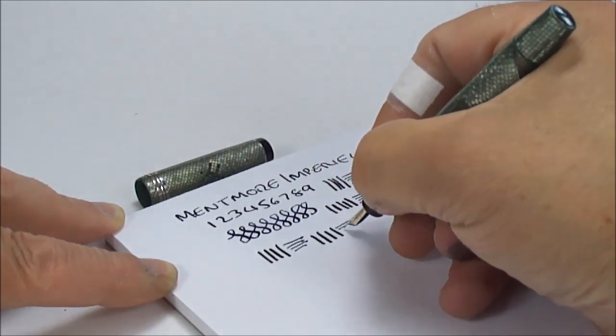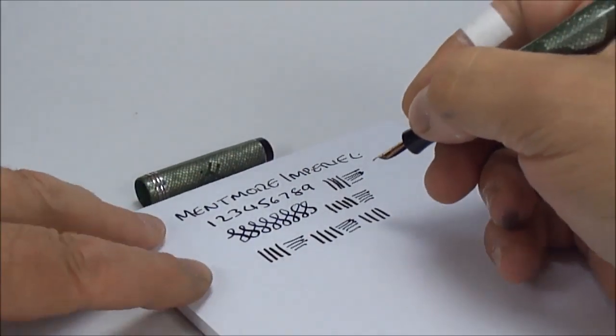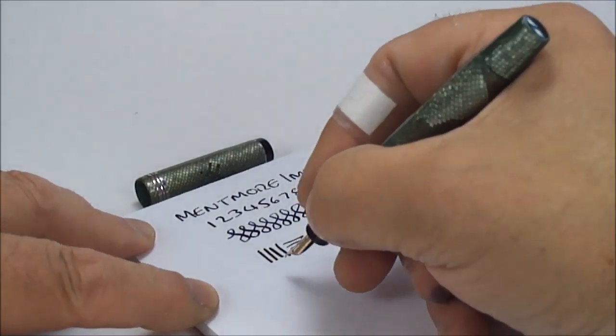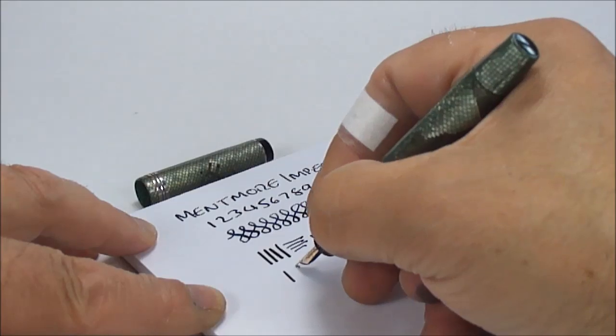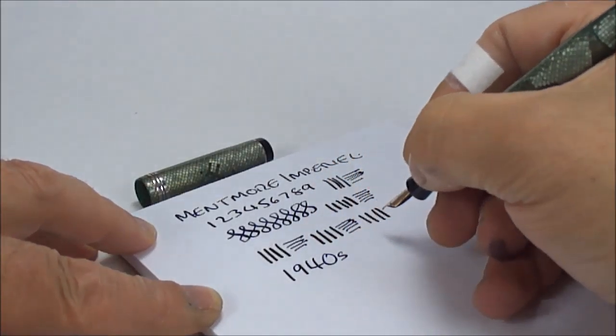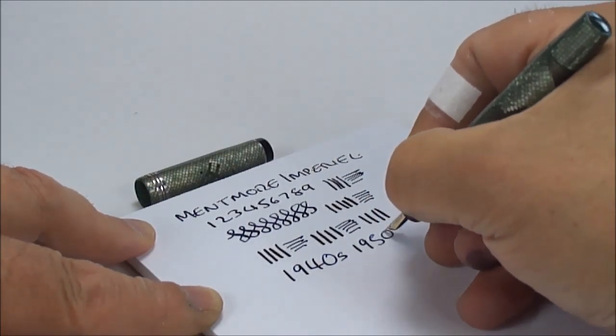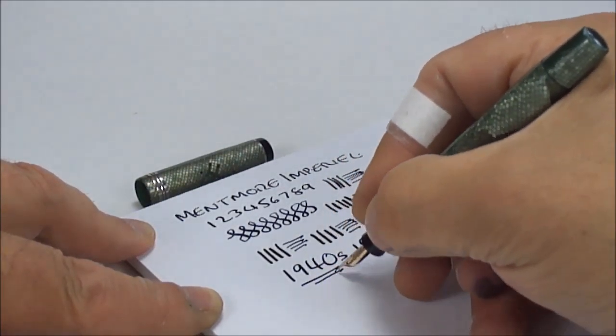So on the downward stroke there with a little bit of pressure, we're getting quite a broad line. As you can see there, on the cross stroke there, a fine line. So what we have is a nice flex nib with variation. And this particular pen I will date in the regions of around the 1940s to maybe just getting on to the early 1950s, but I would say more in the 1940s.